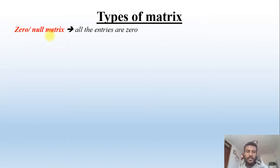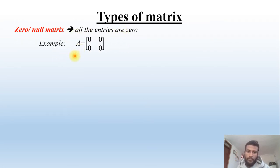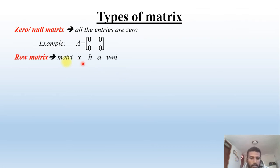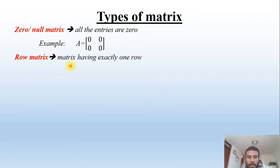The first type is the zero or null matrix, in which all entries are zero. For example, matrix A = [0, 0, 0, 0] — this is a null matrix.